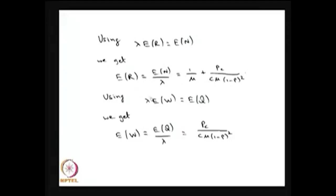You can apply Little's formula at the queue level also. Lambda times the expectation of waiting time is the same as the expectation of the number of customers in the queue. So the average waiting time is the expectation of Q divided by lambda. Since the M/M/c/infinity queue has an underlying stochastic process that is a birth-death process, we are getting all the measures using the birth-death logic.